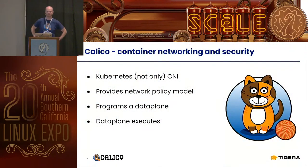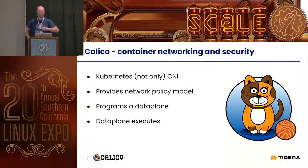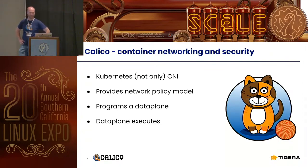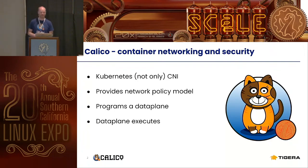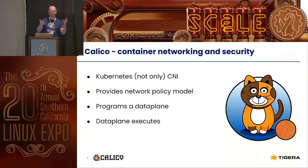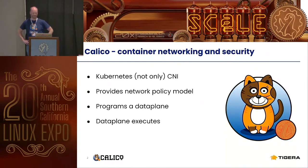For those of you who are not familiar with Calico, Calico provides container networking and security. These days it primarily runs in Kubernetes, serving as a CNI for Kubernetes. When you install Kubernetes you don't have networking and you need some networking plugins, so Calico can be one of your plugins. Calico predates Kubernetes and started way back with OpenStack and other technologies, but now it's primarily focused on Kubernetes.